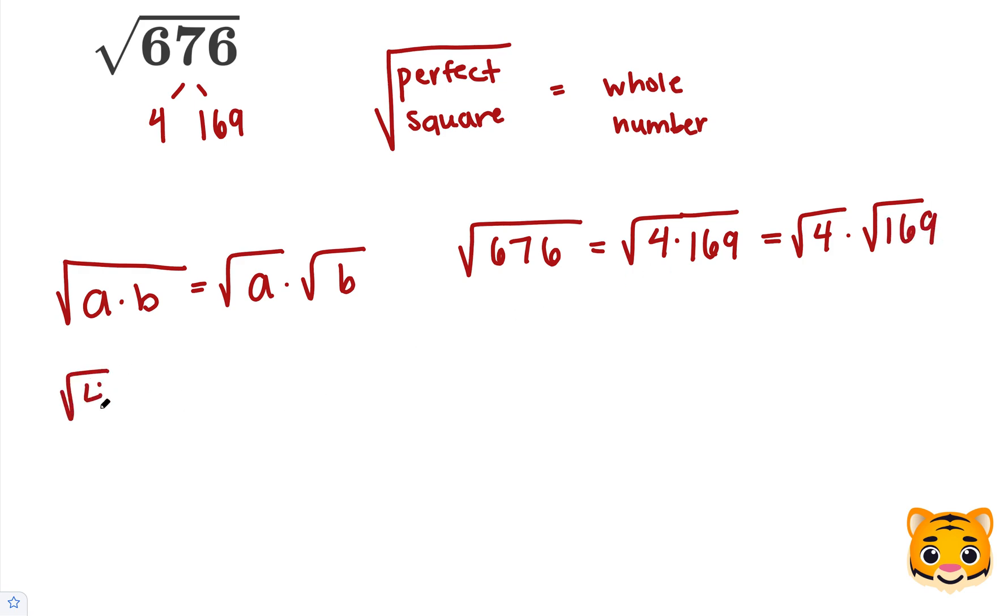The square root of 4 is equal to 2 because 4 is equal to 2 squared. The square root of 169 is equal to 13 because 169 is equal to 13 squared.